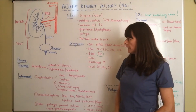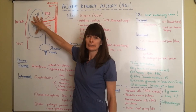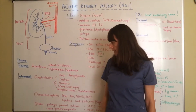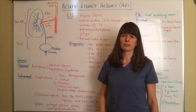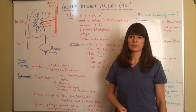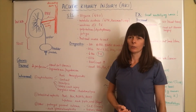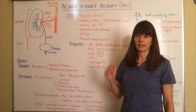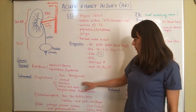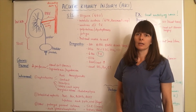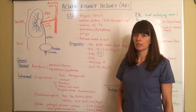For intrarenal failure, there are causes that happen from within the kidney. The first and most important is nephrotoxins — anything that is toxic to the kidneys. We have to be very cautious about taking a good patient history to see what medications might be nephrotoxic and lead to acute kidney injury. The most prominent ones are aminoglycosides, a type of antibiotic with a very high likelihood of causing kidney problems.